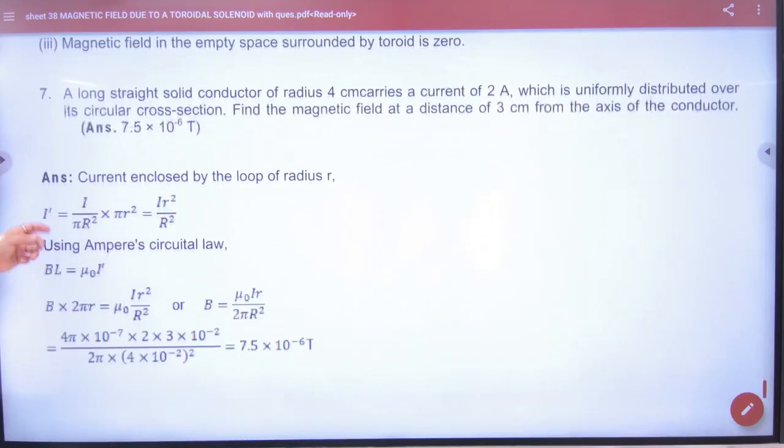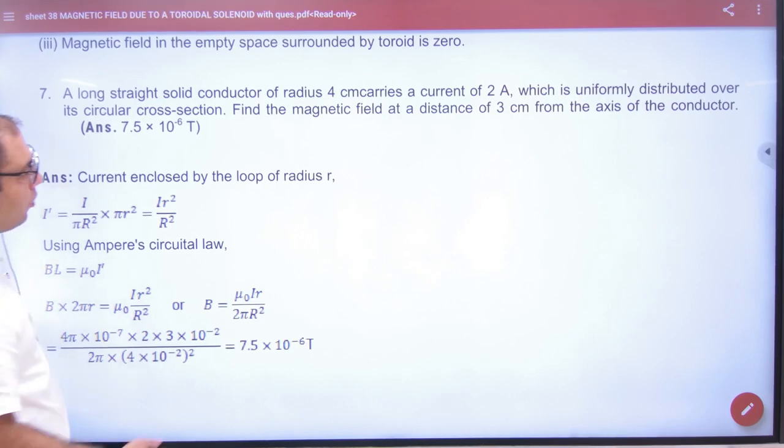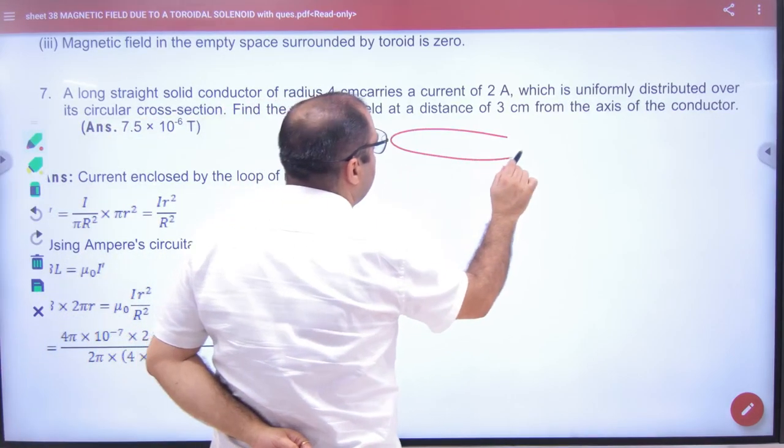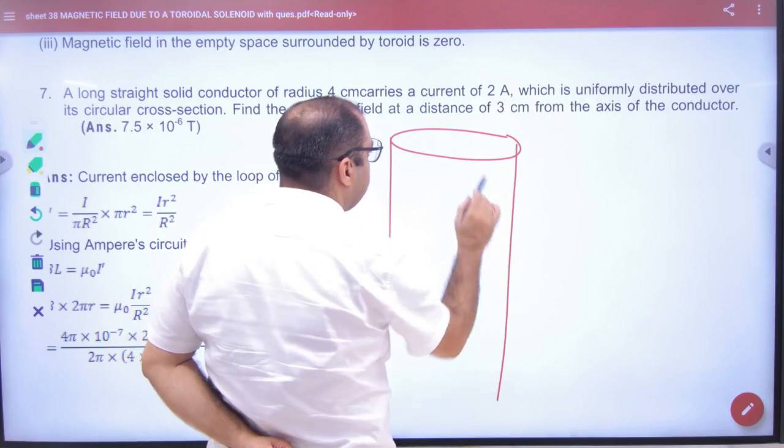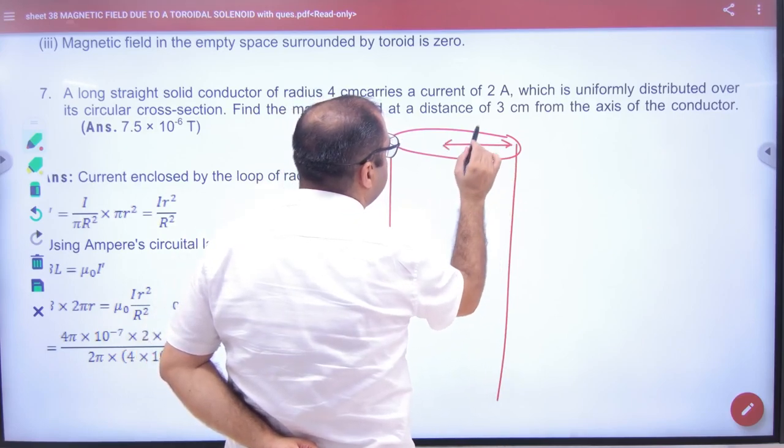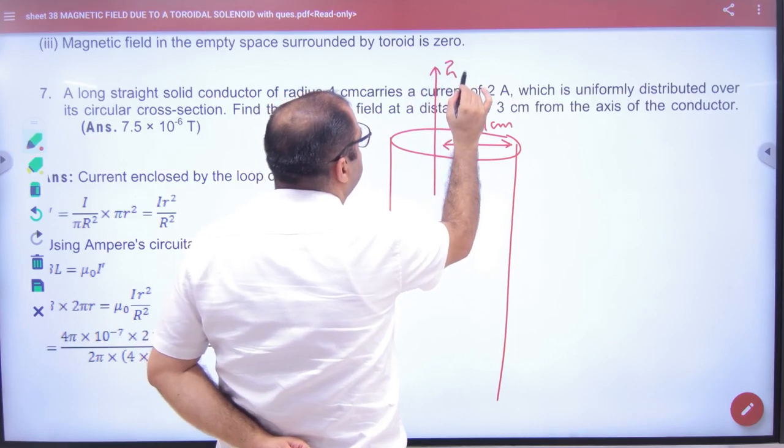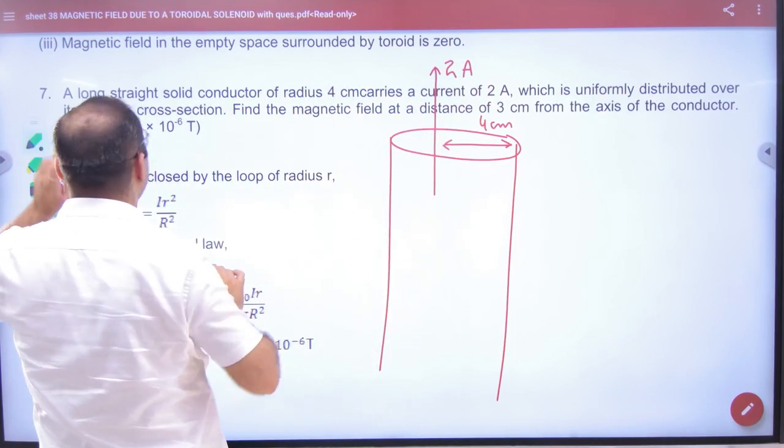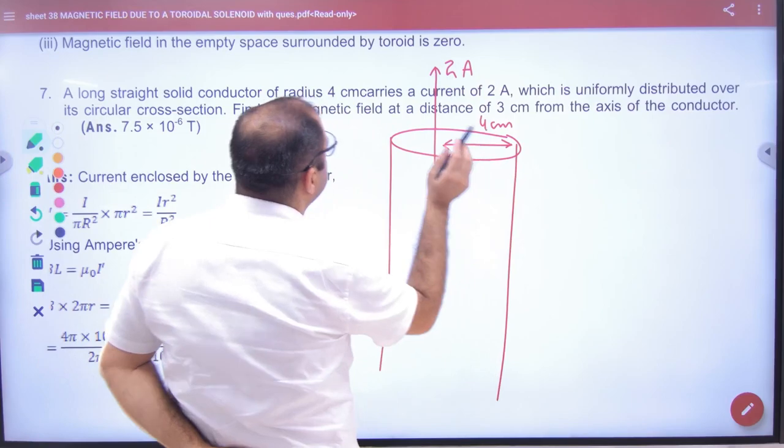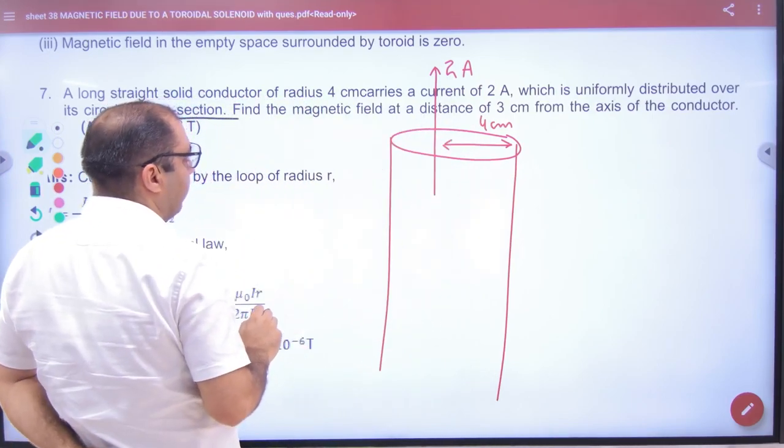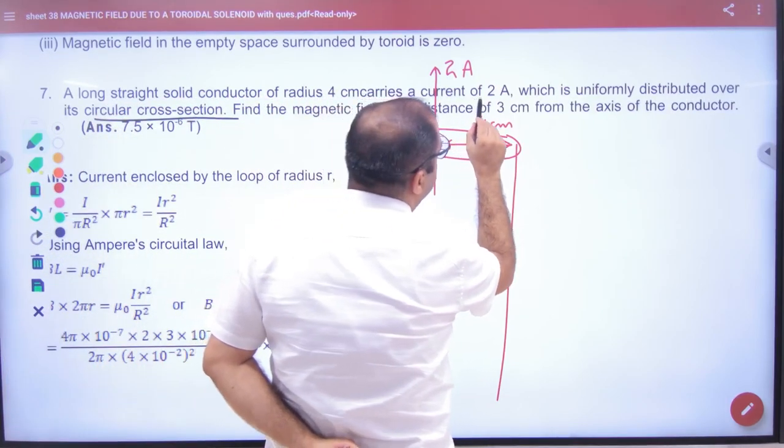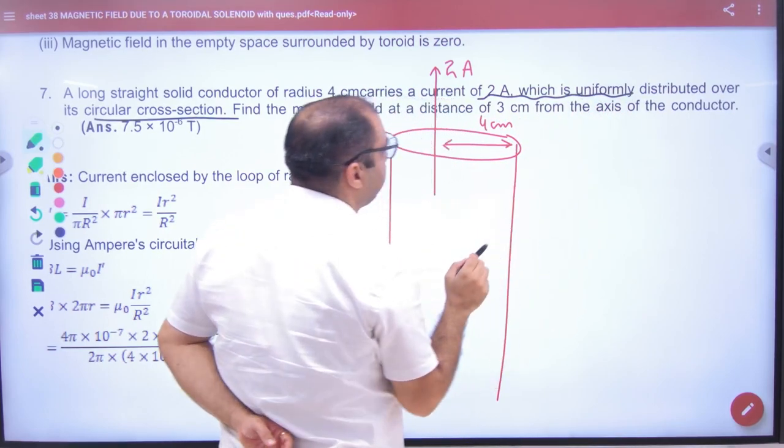Question number 7. Long straight conductor of radius 4 cm. The current is 2 ampere which is uniformly distributed over the cross section area. Magnetic field at a distance of 3 cm from axis of conductor.